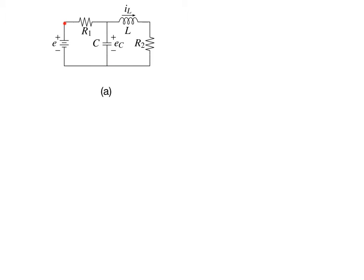There is a distinct voltage between this battery and resistor, over here at this junction, and between this inductor and resistor. So we have a total of four distinct voltages. For each of those, we will establish a zero junction.